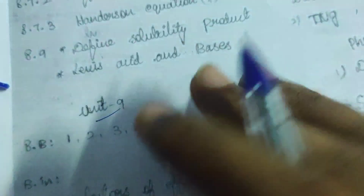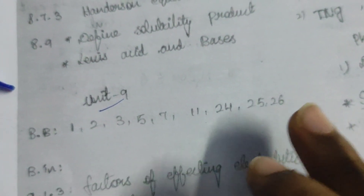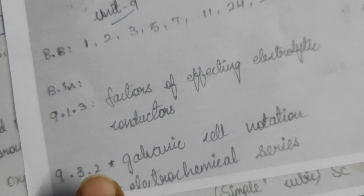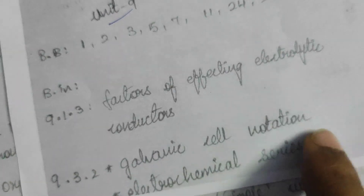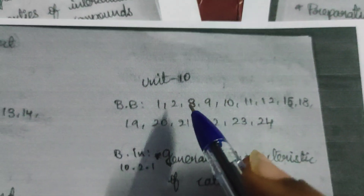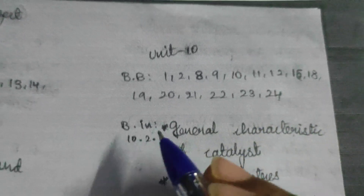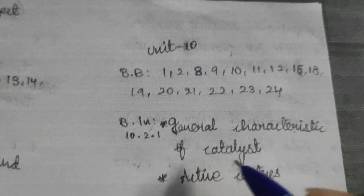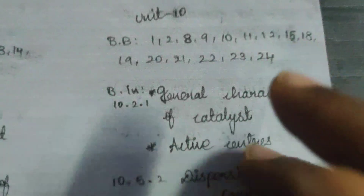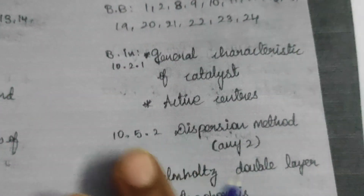Booking: 1, 2, 3, 5, 10, 11, 12, 15, 18, 19, 20, 21, 22, 23, 24. Booking is General Characteristics of Catalysts. This is Active Centers. Check it out — 10.5.2, 10.2.1.